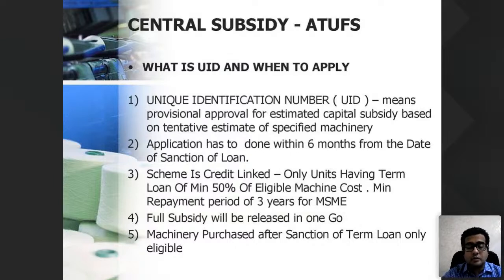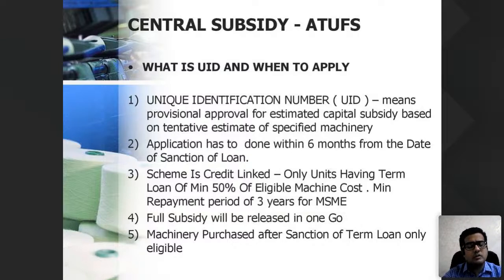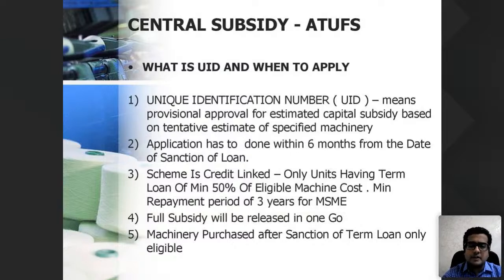You must submit a full profile of the manufacturing unit on the department's portal. They scrutinize it and issue the UID number — not a guarantee, but a provisional approval. After that, a joint inspection is done by the bank, the textile department, and a regional association team to verify that machinery has been properly installed and paid for. Without full payment for the machinery, you cannot get the subsidy.